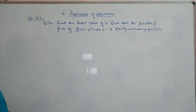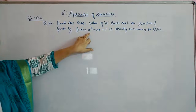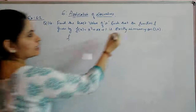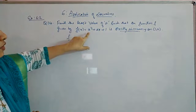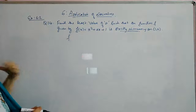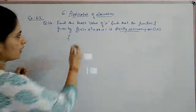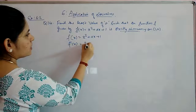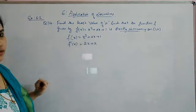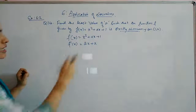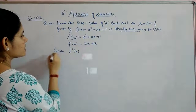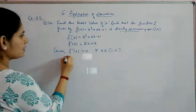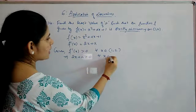Question number 14: Find the least value of a such that the function f given by f of x equal to x squared plus ax plus 1 is strictly increasing on the open interval (1, 2). Since the function is increasing in this interval, we take f dash of x greater than 0. f dash of x is 2x plus a. So 2x plus a is greater than 0 for any x in (1, 2).